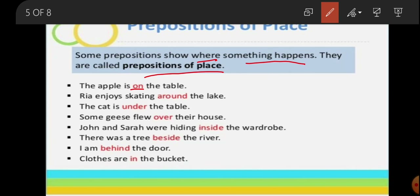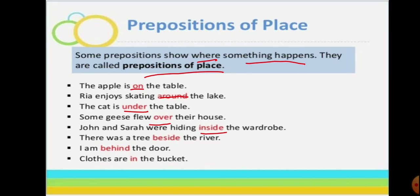More examples of prepositions of place: 'Riya enjoys skating around the lake' — around means all sides, showing where the skating happens. 'The cat is under the table.' 'Some geese flew over their houses.' 'Joan and Sarah were hiding inside the wardrobe.' These are the words which show the place where the noun and pronoun actually is.